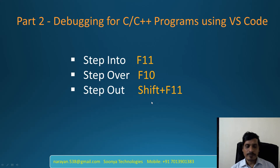What is debugging? Debugging is the line-by-line execution of a program. Debugging plays a key role to analyze code and fix an issue. We will discuss debugging using VS Code — launch VS Code and create a C application.